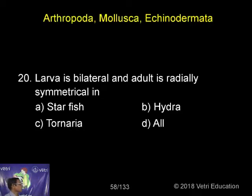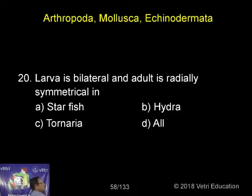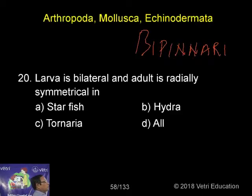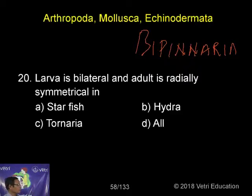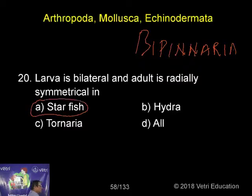In the case of echinoderms, the larva is bilaterally symmetrical. For example, the bipinnaria larva — this is the common larva of starfish — is bilaterally symmetrical, whereas the adult is radially symmetrical. Specifically, the adult exhibits pentaradial symmetry.